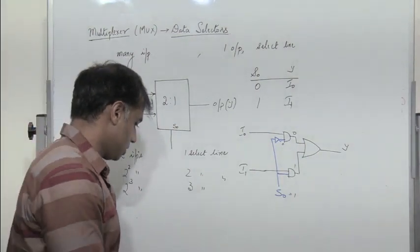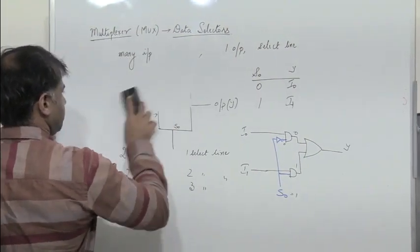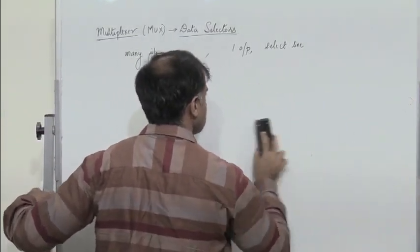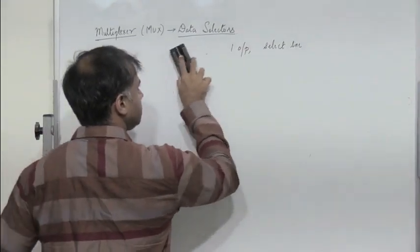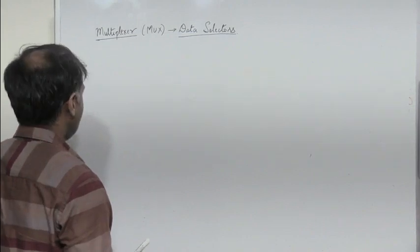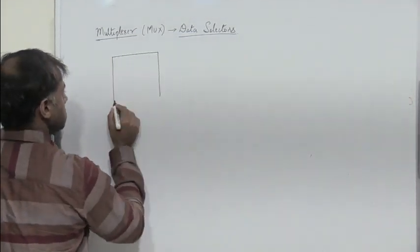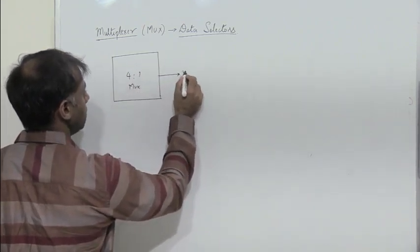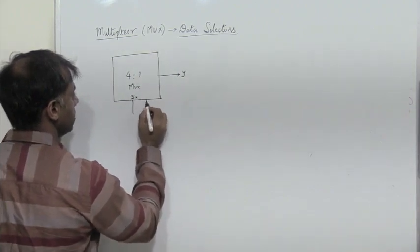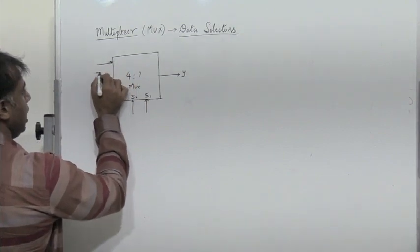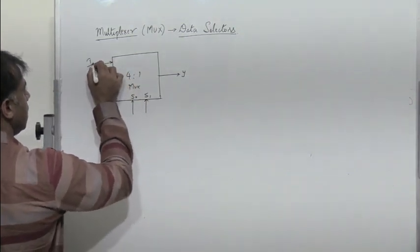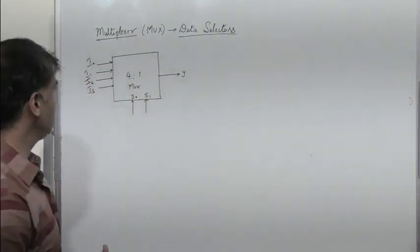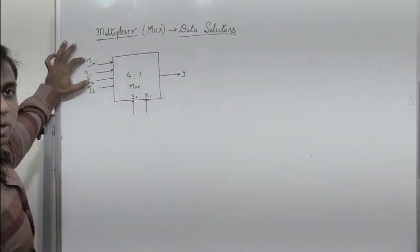Now let us see how a 4-to-1 mux works. As already stated, a 4-to-1 mux has 4 inputs, 2 select lines, and 1 output y. The select lines are s0 and s1, and the inputs are i0, i1, i2, and i3. These two select lines determine which input is selected.